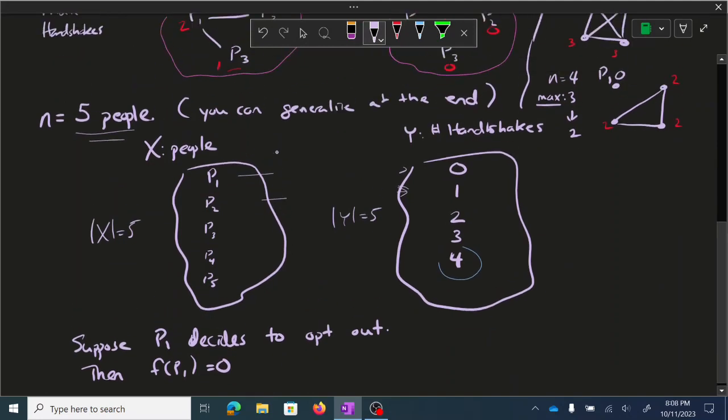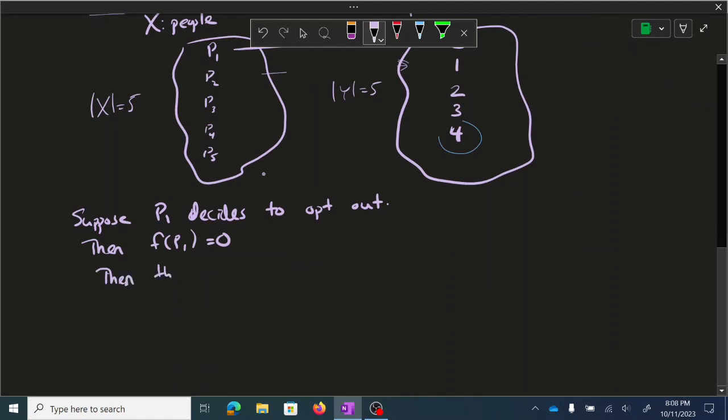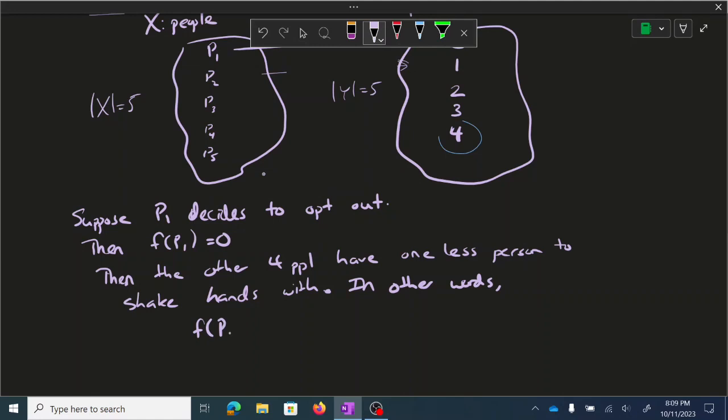And that's how we're going to argue here. So if F of P1 equals zero, so if P1 decides to opt out, then the other four people have one less person to shake hands with. In other words, F of PJ will be less than or equal to three for J equals two, three, four, five.